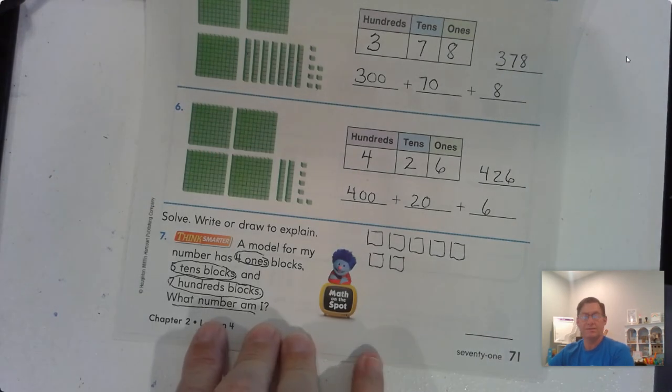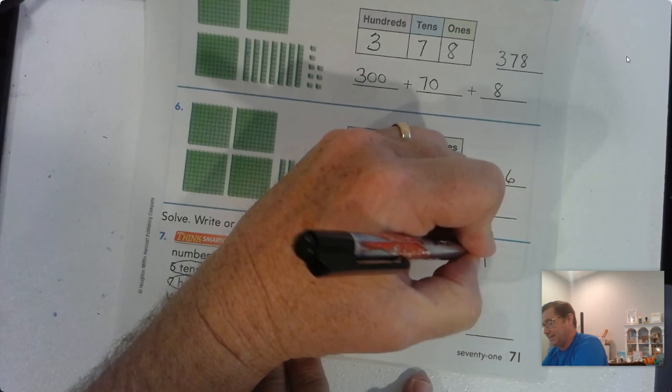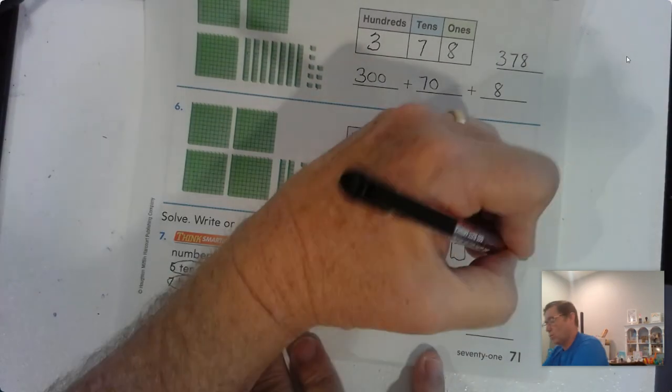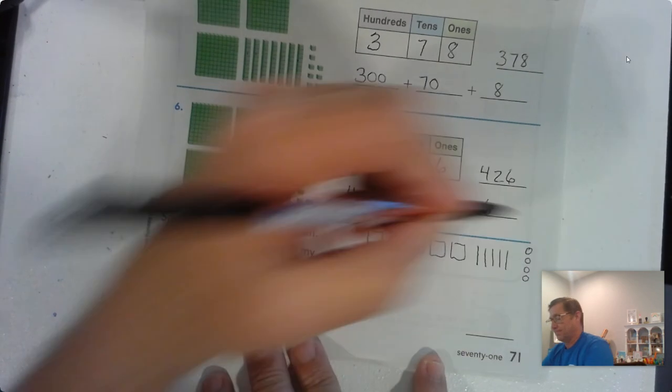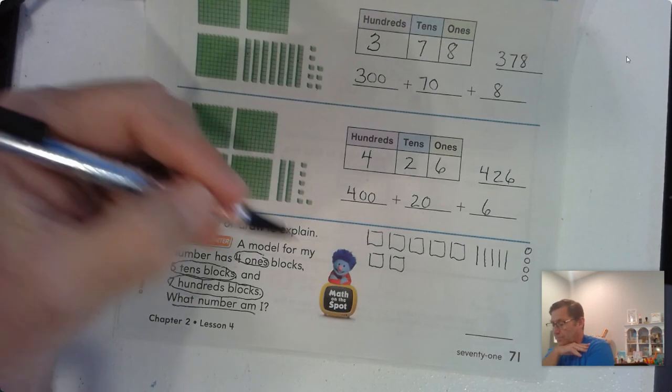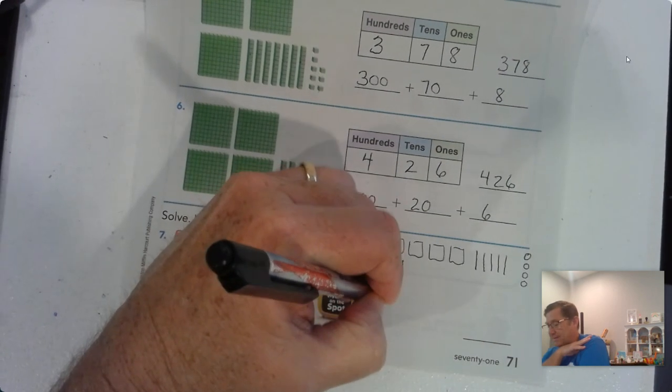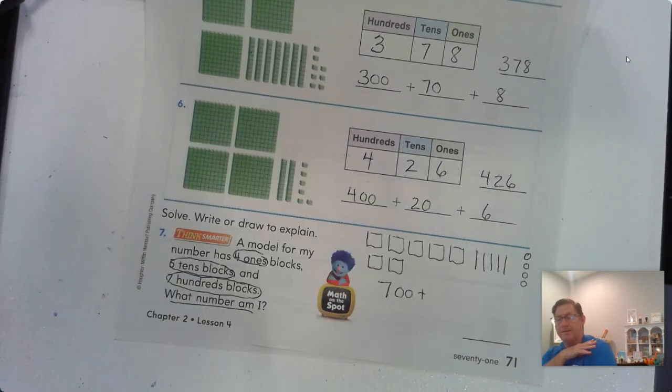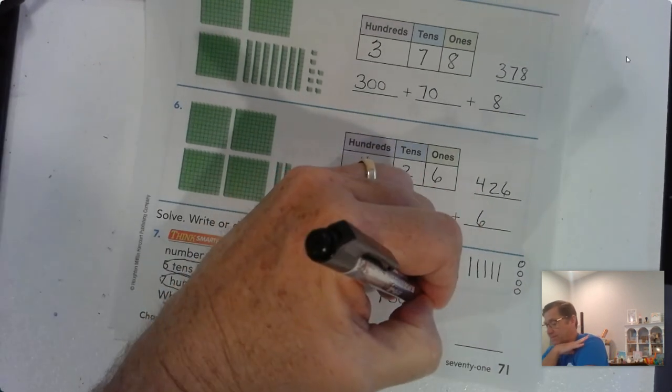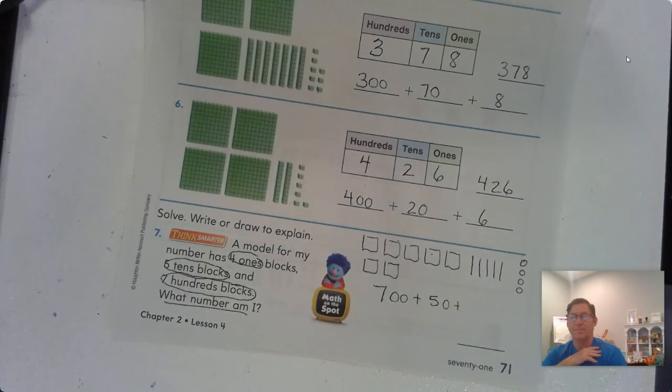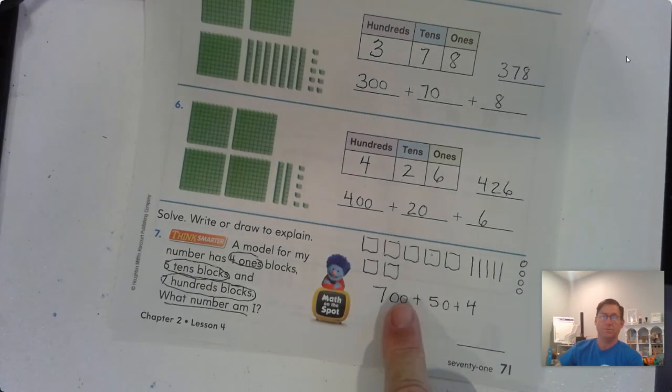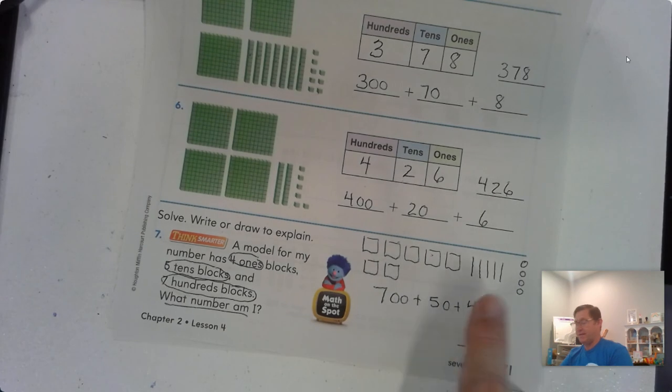Five tens and four ones. So 700, right, for the 700 blocks. 5 tens is written as 50, and the 4 ones would be written as 4. So just read it. Seven hundred fifty-four.